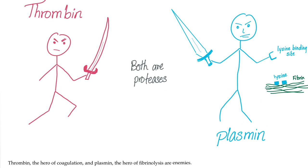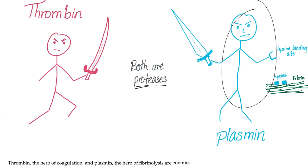Think of thrombin and plasmin as enemies. Thrombin wants blood coagulation. Plasmin wants to destroy the clot and restore the blood flow. Both are proteases, which are enzymes that destroy or digest proteins. Thrombin is the hero of coagulation; plasmin is the hero of fibrinolysis, and they are enemies.